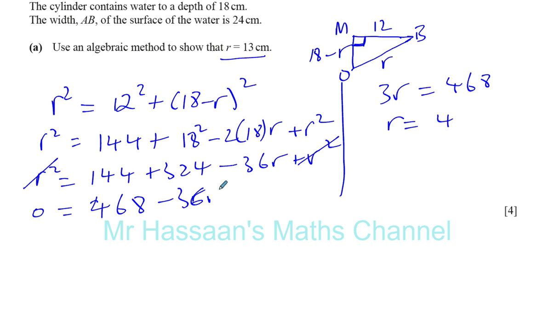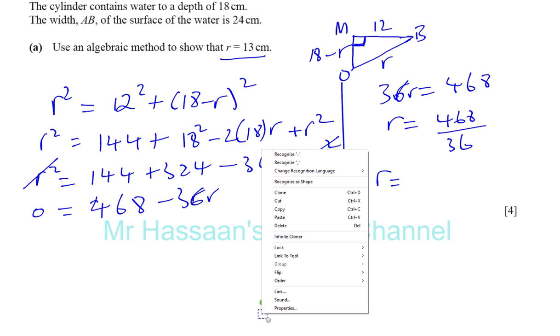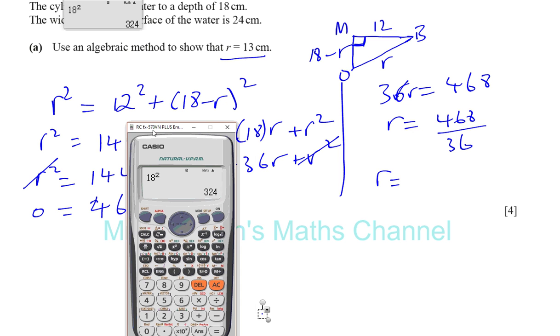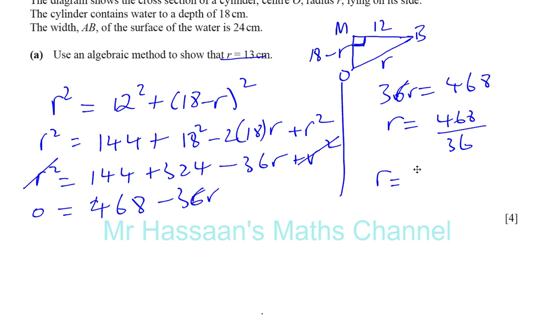You should be careful of silly mistakes. Divide both sides by 36. So R is going to be 468 divided by 36. Let's move this out of the way. You're going to have 468 divided by 36. 468 divided by 36 gives you 13, which is exactly what we had to show. So R is equal to 13 centimeters.